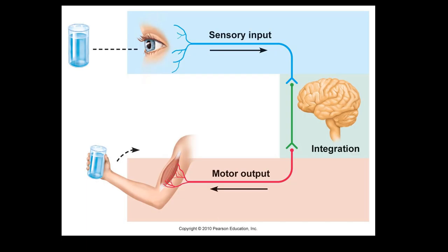Next, what are the three basic functions of the nervous system? This slide shows all of those. We have sensory neurons that take information from outside the body and send it to the central nervous system. We have neurons within the central nervous system that integrate that information - meaning they do something with it, like help you understand it. For example, it helps you recognize that's a glass of water - it interprets the sensory information that comes in.